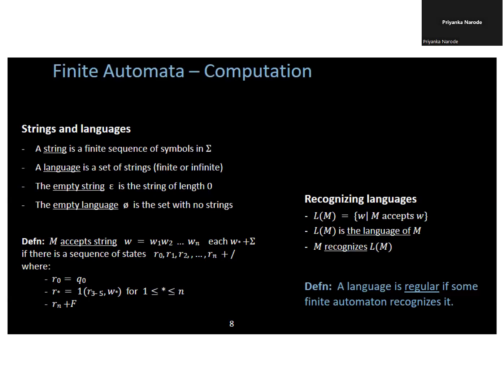This is string and language. These are the basic concepts for finite automata. A string is a finite sequence of symbols in summation. A language is a set of strings. A set of strings means you write down L equals {0, 01, 1, 110}. These are your strings.